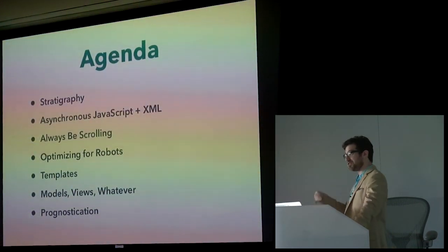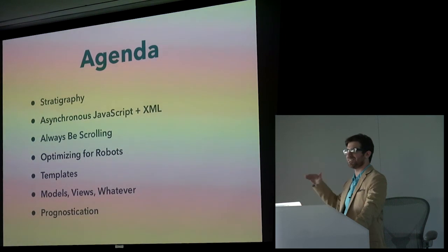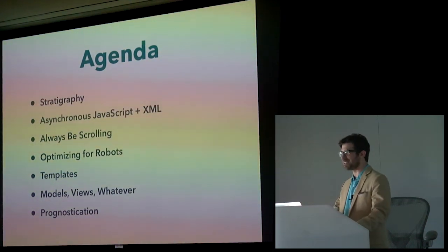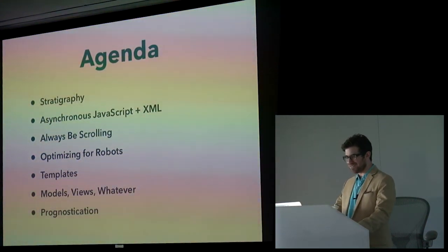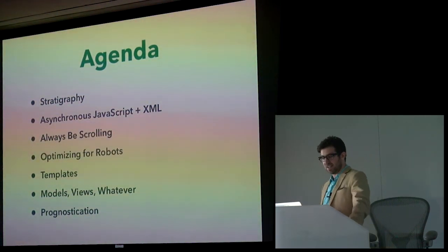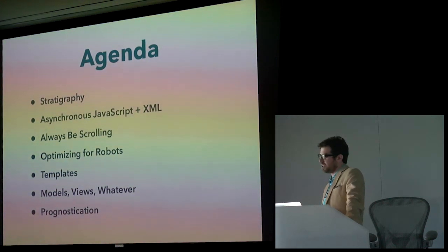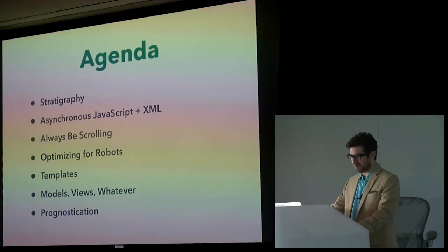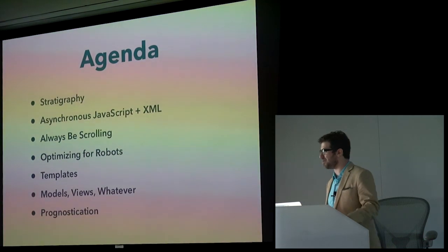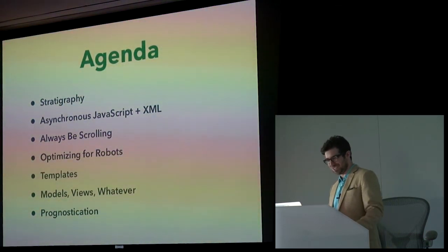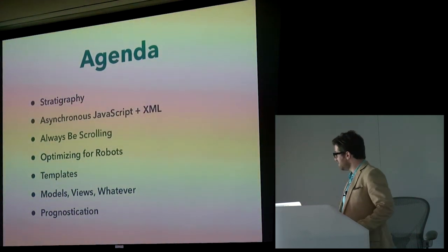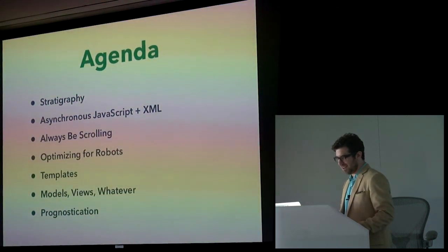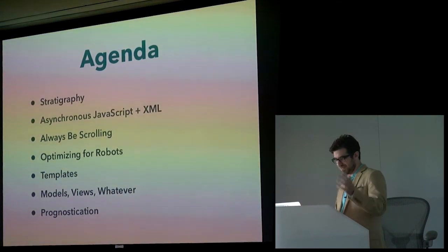So today I'm going to talk about stratigraphy — studying the layers of the Gilt tech stack. I'm going to talk about a technology called asynchronous JavaScript and XML — maybe you guys have heard of that one — in the context of a particularly tough problem, which is the problem of pagination. I'm going to talk about robots and code that we write for robots. I'll talk about templates and how we use templates to keep the balance between robots and humans in check. I'll discuss a very serious architecture: models, views, and whatever. And finally, I'll close by attempting to predict the future. As I said before — hubris.